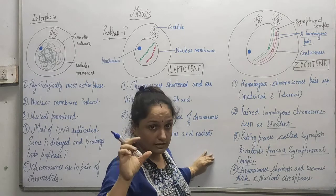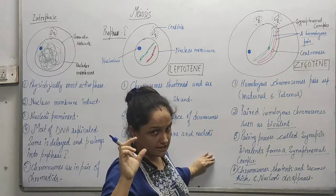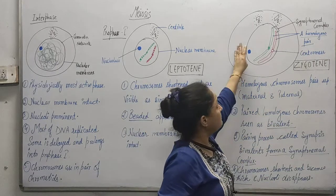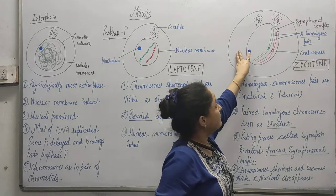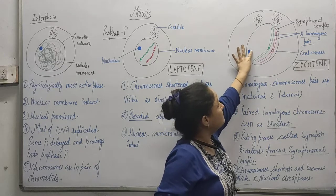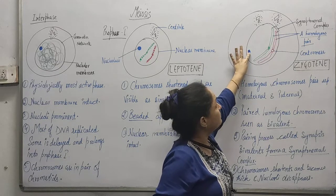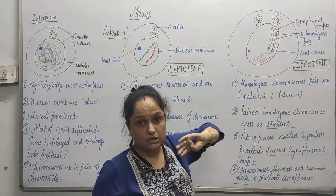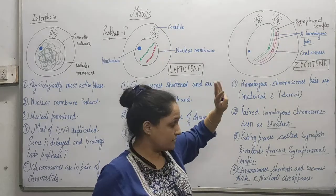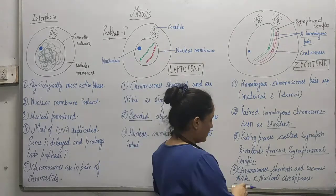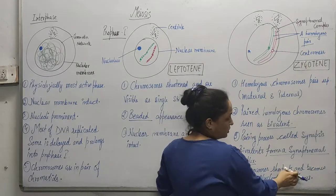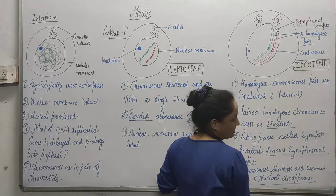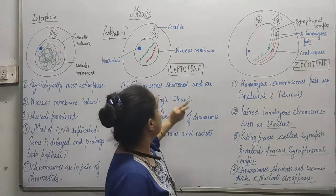The chromosomes become more thick and condensed, and the nucleolus begins to disappear. It will gradually disappear through this phase. So in summary: chromosomes shorten and become thick, and the nucleolus disappears after this phase. This completes the Zygotene stage.